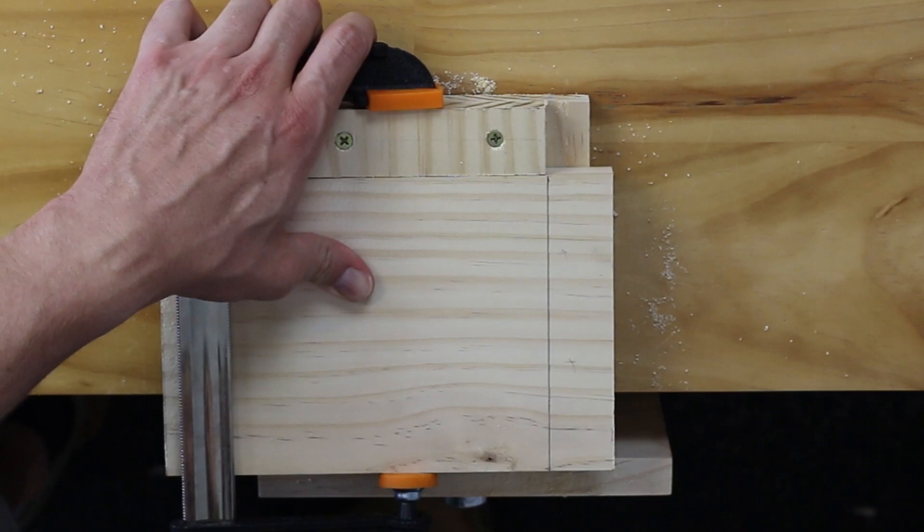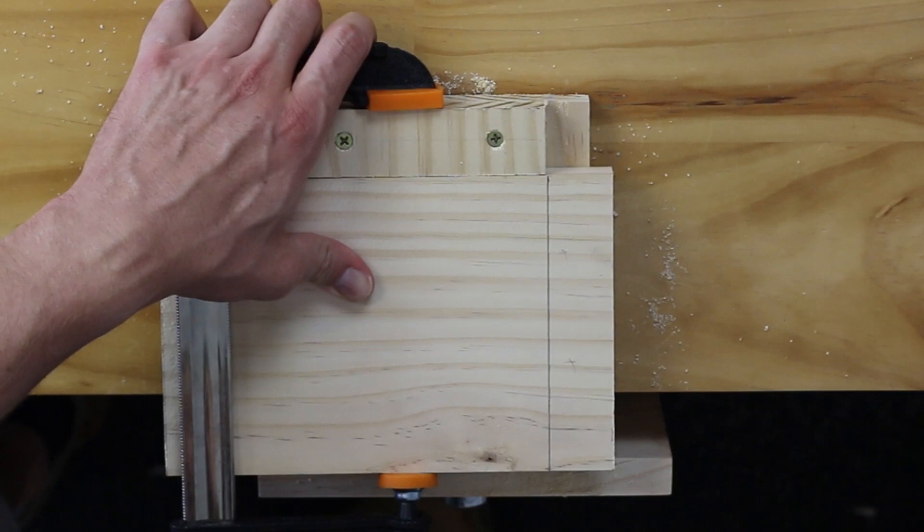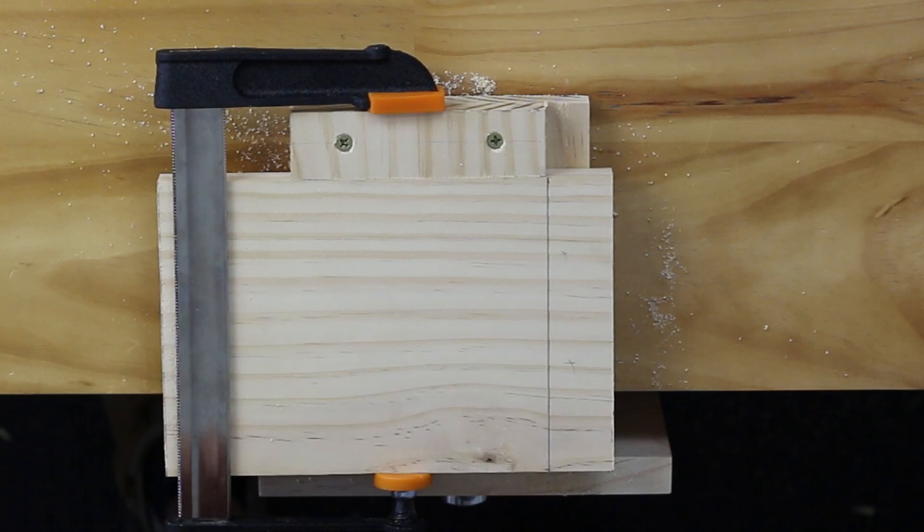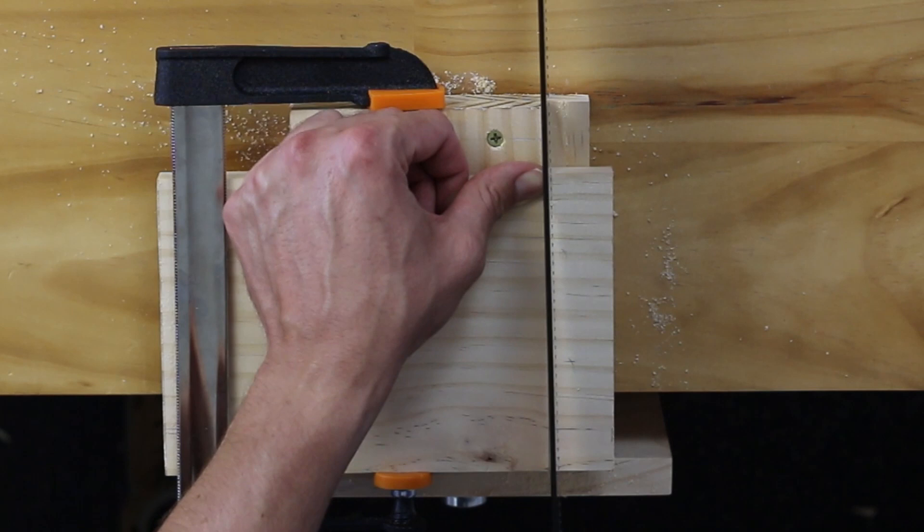You do not need to over-tighten the clamp. You just want to make sure that your timber isn't going to sway or move whilst cutting. Get your tenon saw and place it just on the scrap side of the line.